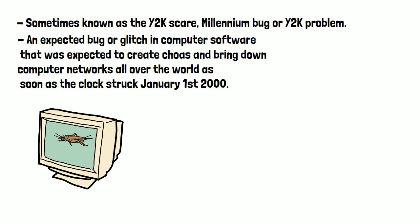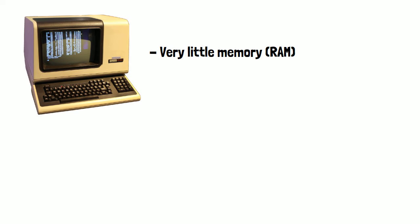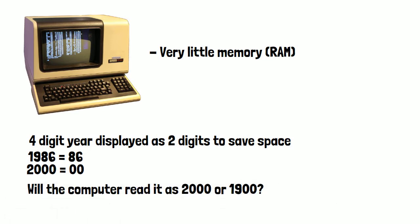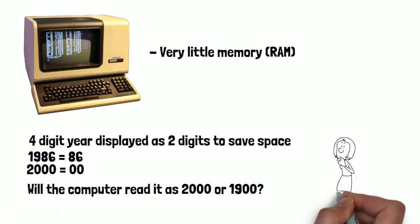Let's have a look at what the bug actually was. To understand this we need to look back a few decades to when computers had very little memory. One of the ways early computer programs would save space was to abbreviate four-digit years as two digits. Software treated all dates as being in the 20th century, so 1986 would display as 86, for example. The issue was that when the clock hit January 1st, 2000, no one had any idea whether computers would read the two-digit abbreviation as the year 2000 or 1900, as it would be abbreviated to 00.